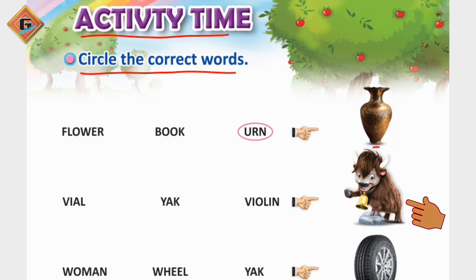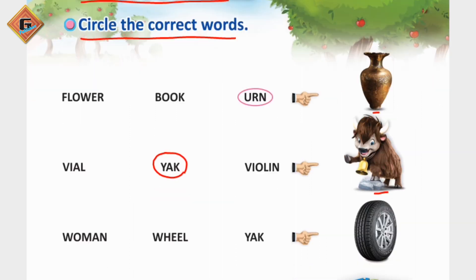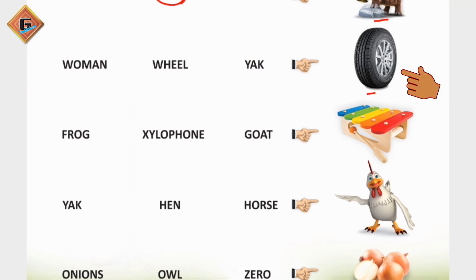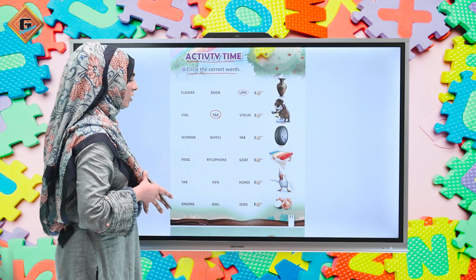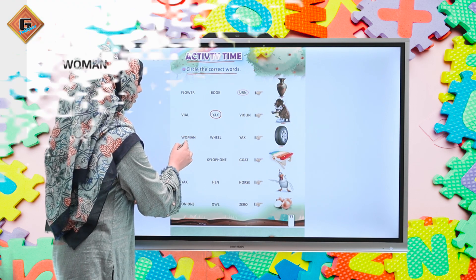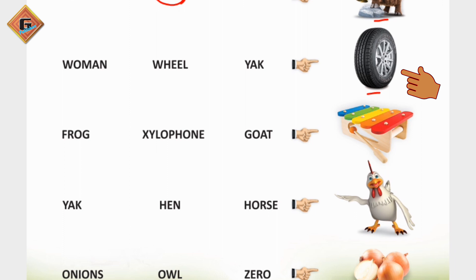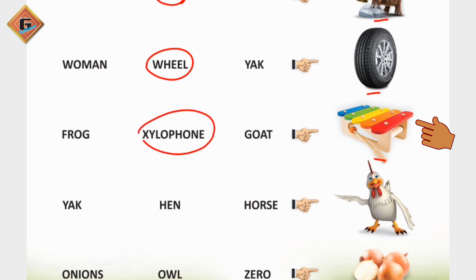In the next picture, this is a yak — and this is an animal. Now see, the words are: while, yak, and violet. We circle yak. Next is wheel — you will see that cars, motorcycles, wheels, and trucks — we circle wheel. The first word choices are: women, wheel, and yak — we circle wheel. Next is a musical instrument — frog, xylophone, goat — we circle xylophone.